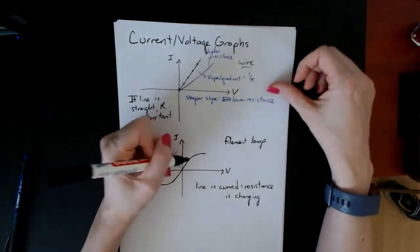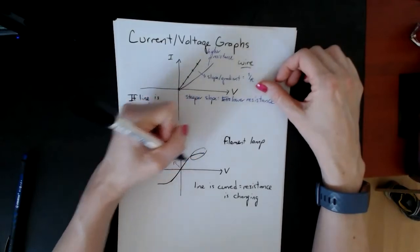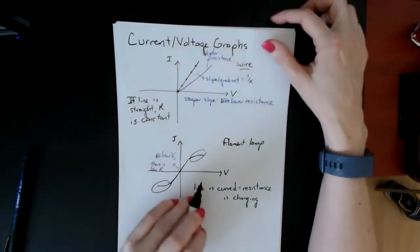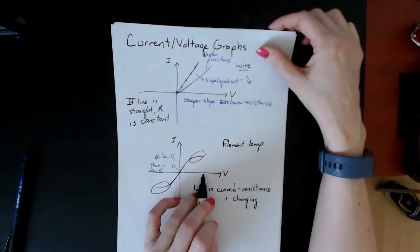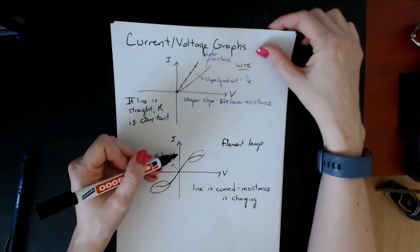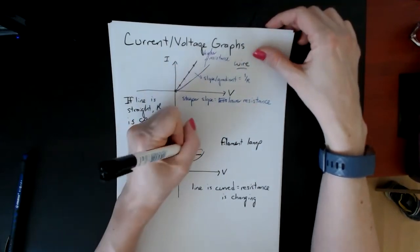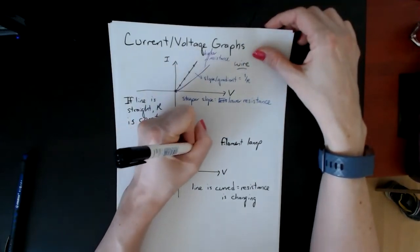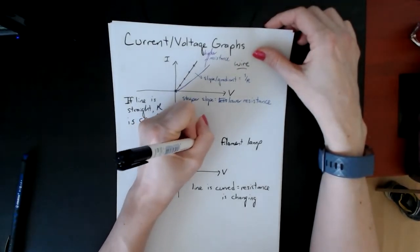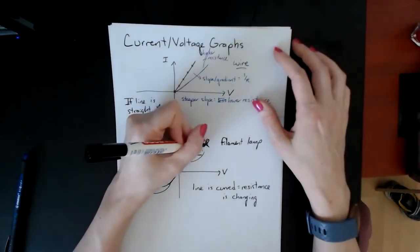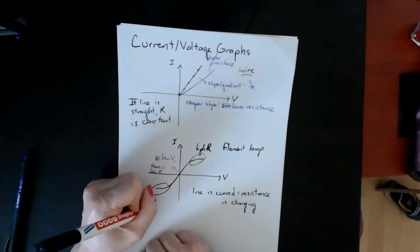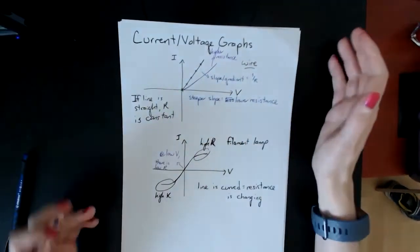But as you increase the voltage—here and here—the idea is that you can increase the voltage a lot, but you don't get a large corresponding increase in current. This means you're looking at high resistance. And here you also have high resistance. Why is that?